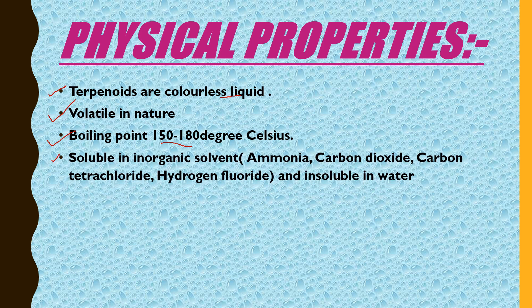The fourth physical property is that terpenoids are soluble in organic solvents. They are also soluble in inorganic solvents — examples of inorganic solvents include ammonia, carbon dioxide, carbon tetrachloride, and hydrogen fluoride. However, terpenoids are insoluble in water.